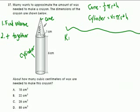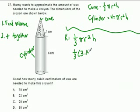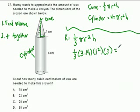First, we figure out the volume of the cone: one-third times π times r squared times the height. That's one-third times 3.14 times 1 squared times 3. On your calculator, one-third times 3.14 times 1 squared times 3 equals 3.14. That's the volume of the cone.